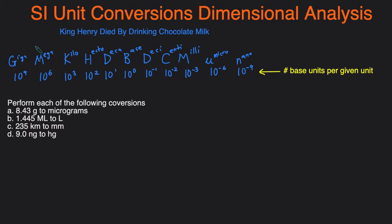The very first step is to either memorize or be given the SI prefixes. If you have that down, just skip that part and go straight to the practice problems. But if you have to memorize the SI unit prefixes, here's a mnemonic: King Henry died by drinking chocolate milk. That stands for kilo, hecto, deca, base, deci, centi, milli — and that covers the majority of the SI unit prefixes you have to memorize.